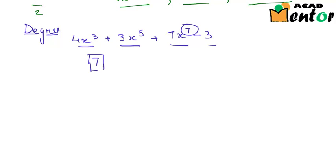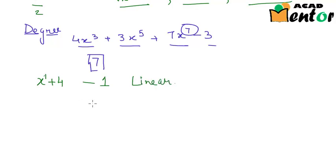When I say I have a polynomial x plus 4, the highest power is x to the power 1, so the degree is 1. A polynomial with degree 1 is known as a linear polynomial, while a polynomial with degree 2 is known as a quadratic polynomial. And when the degree is 3, we call it a cubic polynomial.